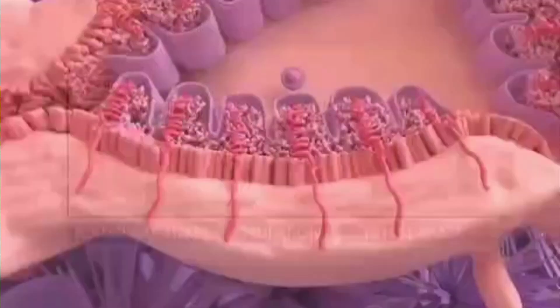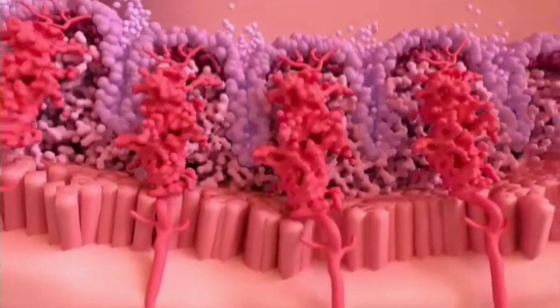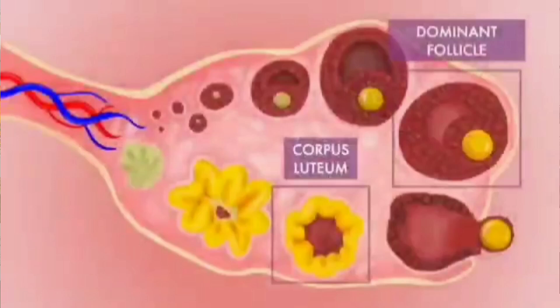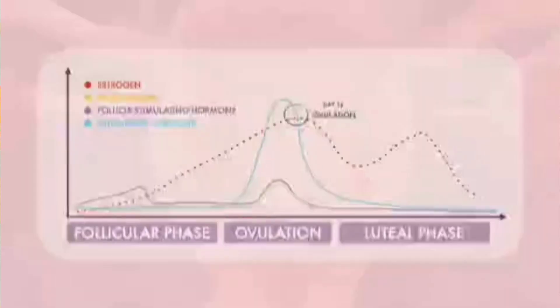From the corpus luteum, for the next 14 days, the hormone progesterone is released. Progesterone continues to act on the uterine lining, further increasing its thickness and stabilizing the endometrial lining to make the environment suitable for a pregnancy. When there is no pregnancy, around day 28 or 29 of the cycle, the corpus luteum disintegrates.